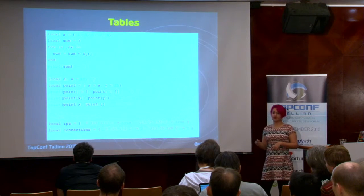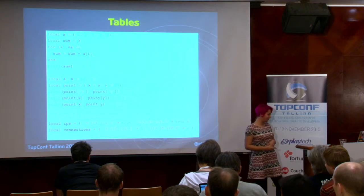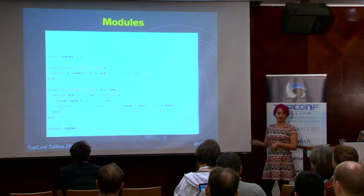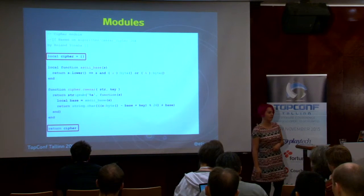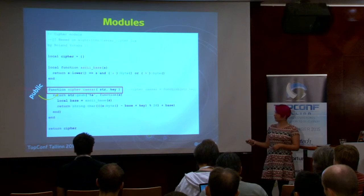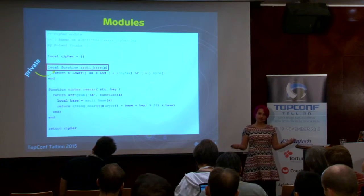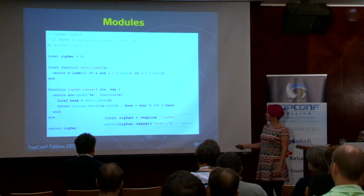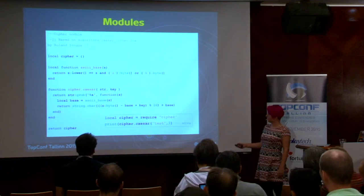Lua has syntactic sugar for string keys — you can use dot notation instead of bracket notation, and they are exactly the same thing but much cleaner. Tables can be used as modules: you create a table, index public methods and values to it, keep private things as local variables, and return the table at the end. When you call require with the filename, it assigns that table to your variable. That's all there is to making a module.